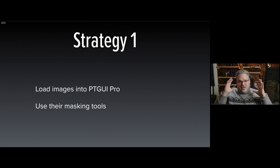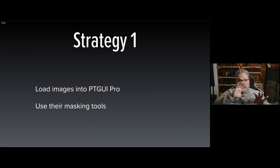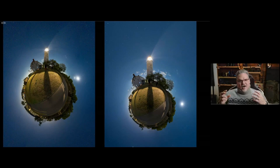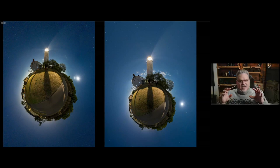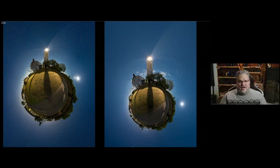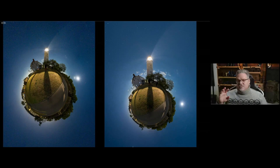Once you have the little planet projection, I have three different paths I choose from. The first strategy is to use PT Gui's masking tools — a green mask to allow something, red to exclude, or an eraser. I processed all the images and sent them to PT Gui, let it choose where to blend everything. It came out a bit noisy, so I went back to Lightroom Classic, applied AI Denoise, and resent it. Then I used their masking tools to choose which parts I wanted — those masking tools in PT Gui are very powerful.